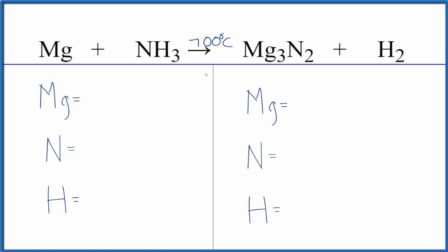So let's balance the equation. We have one magnesium, one nitrogen, and three hydrogen atoms. On the product side, three magnesiums, two nitrogens, and two hydrogens.